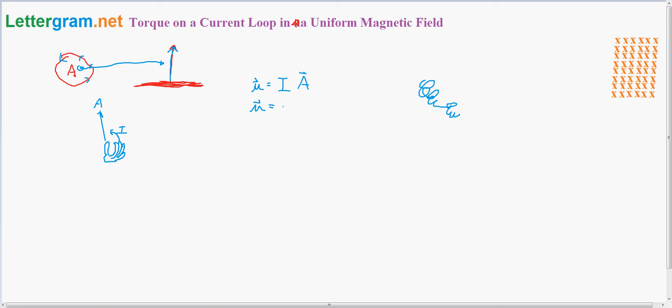You have the number of loops times the current times the area, assuming that this is all the same area.